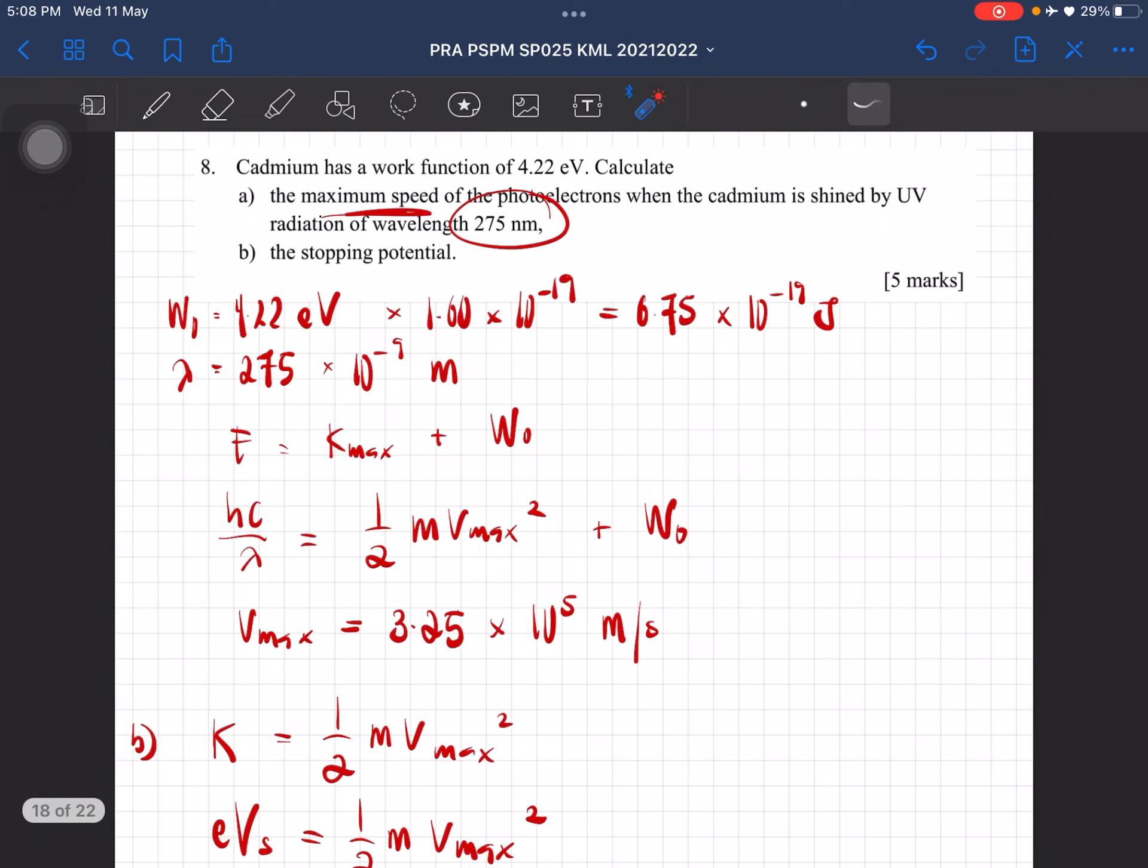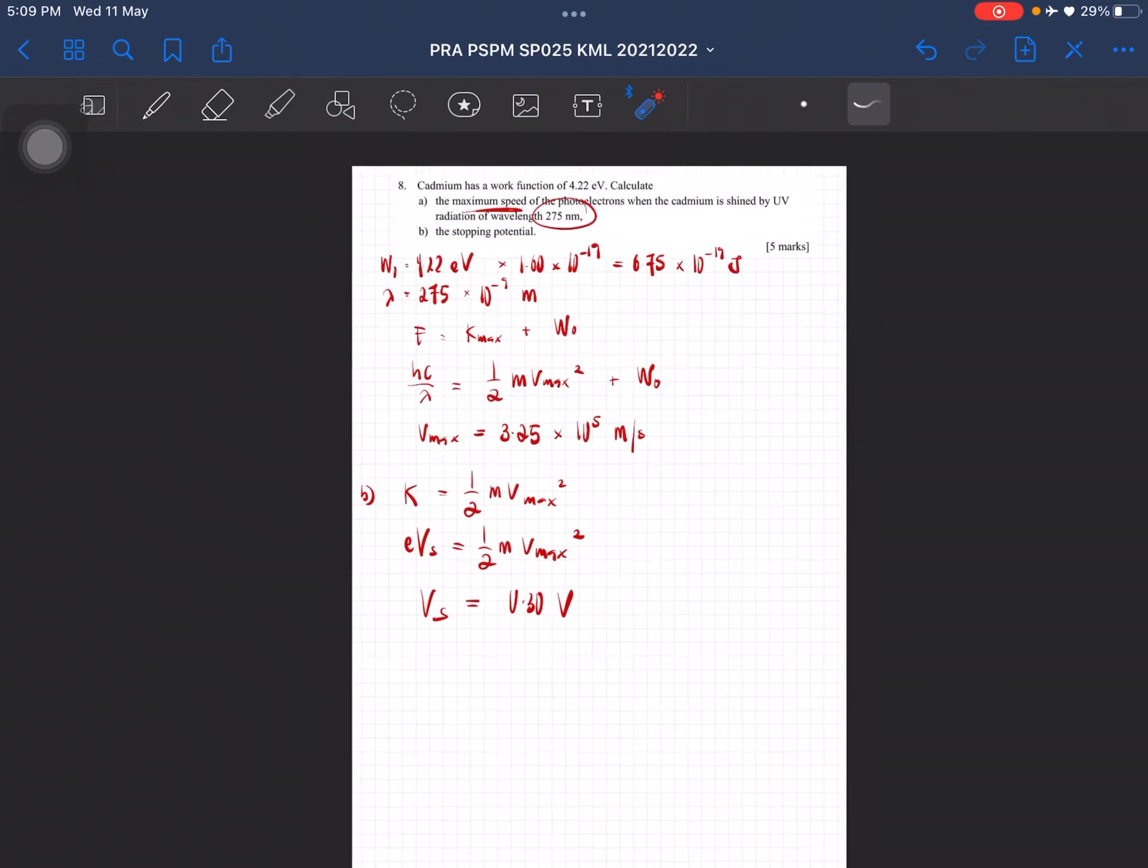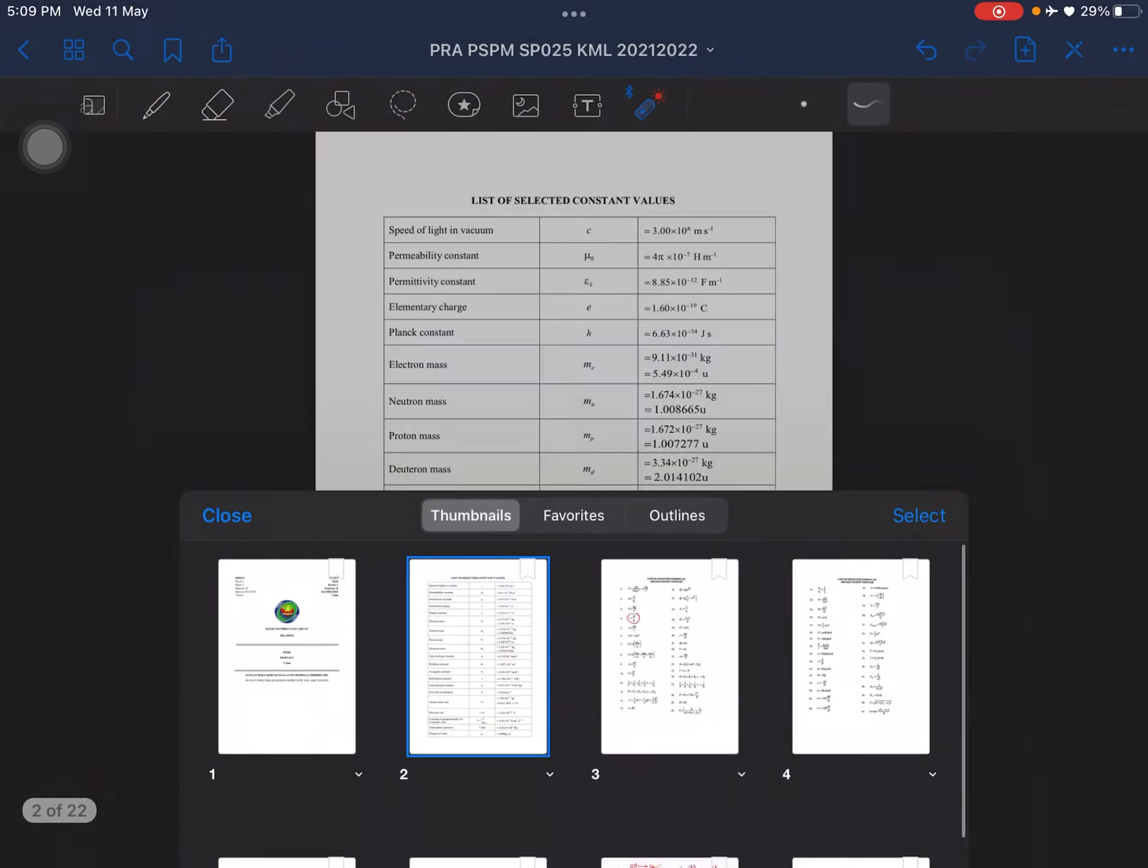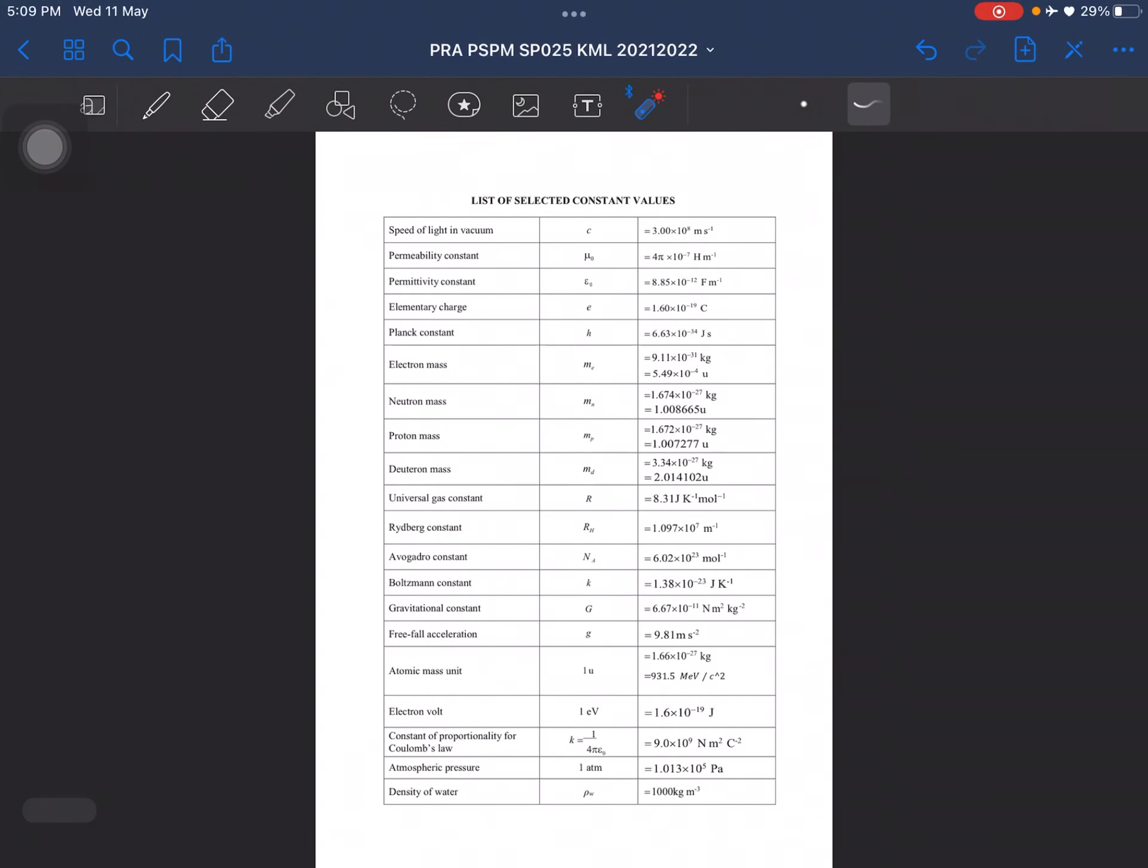which is... this one is the same as mass of the cadmium. Oh, sorry, it's not mass of the cadmium, it's mass of the electron, which is equal to 9.11. This one is the mass of the electron.